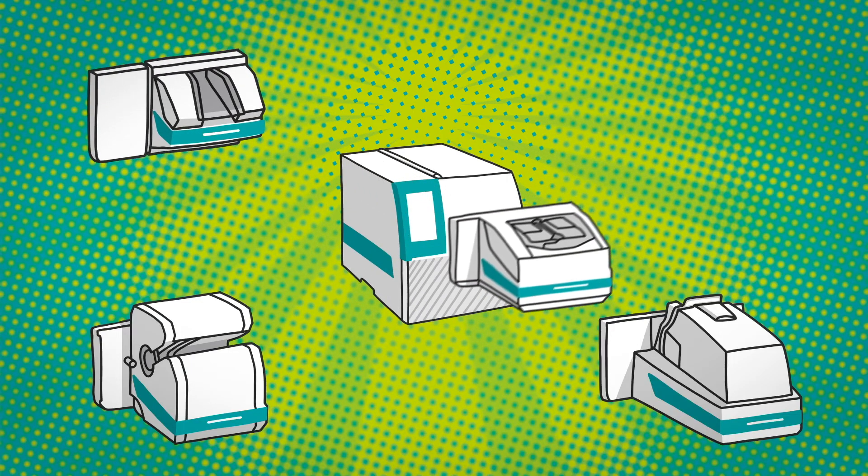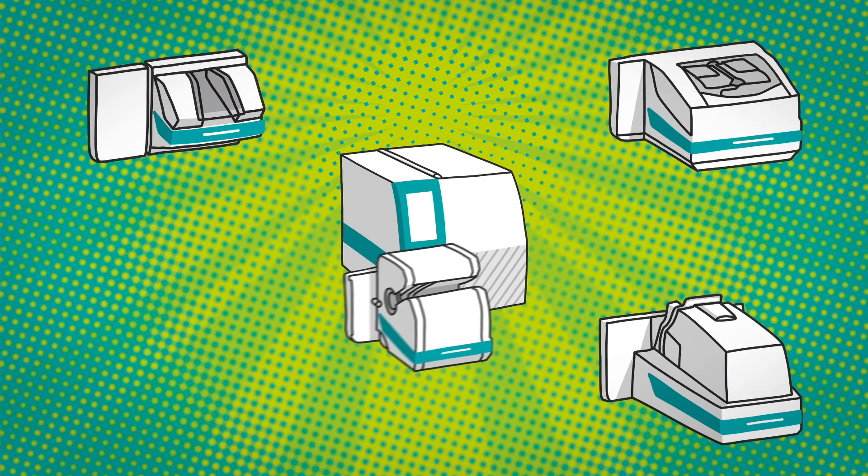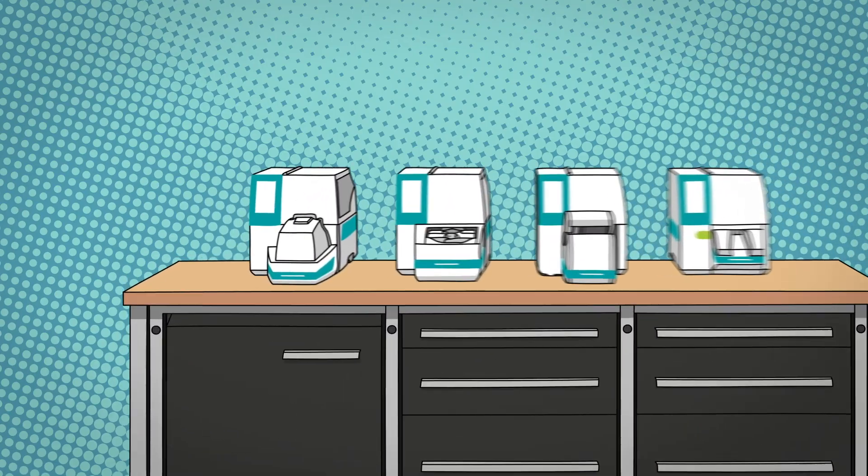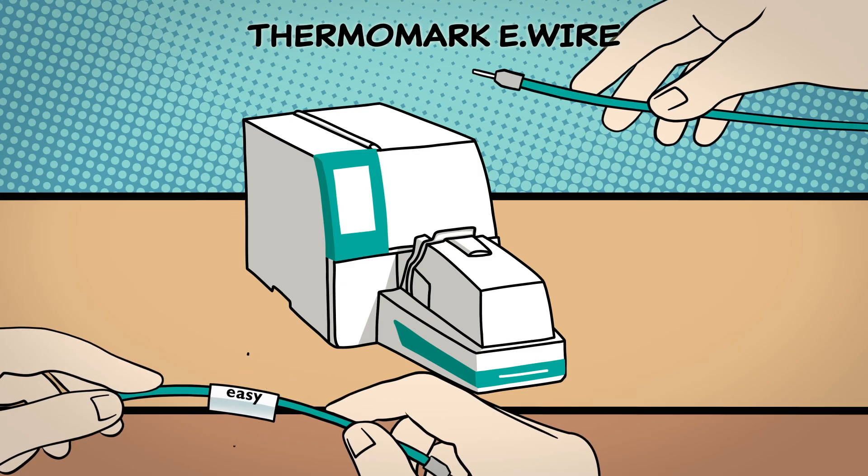This enables the efficient implementation of automated identification solutions for wires, cables, and terminal strips. The Thermomark E-Wire can be used to mark radially and axially movable and captive cable markers.